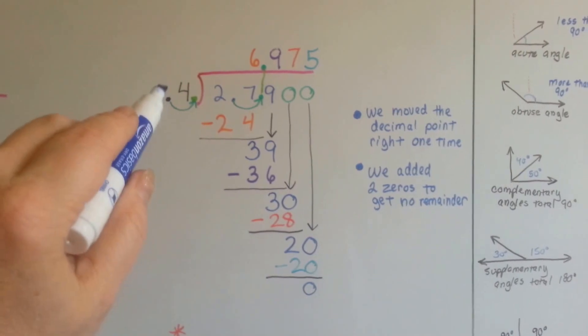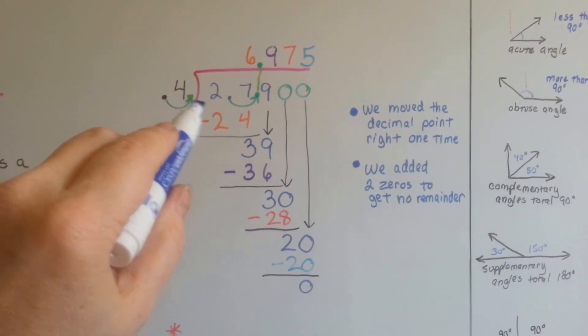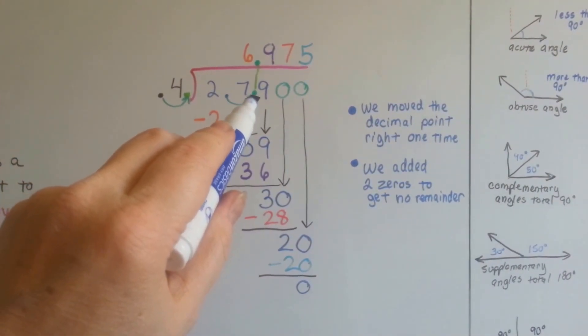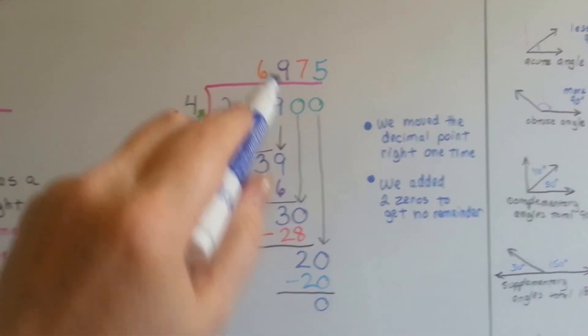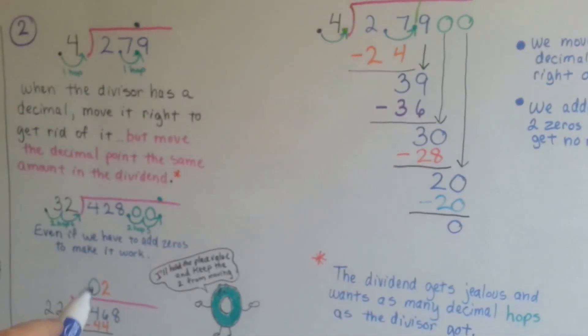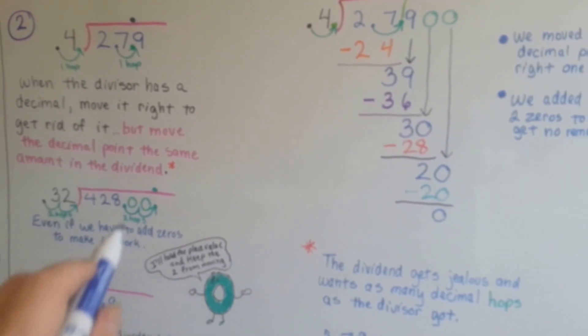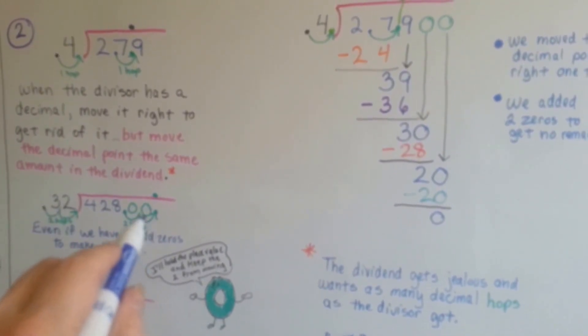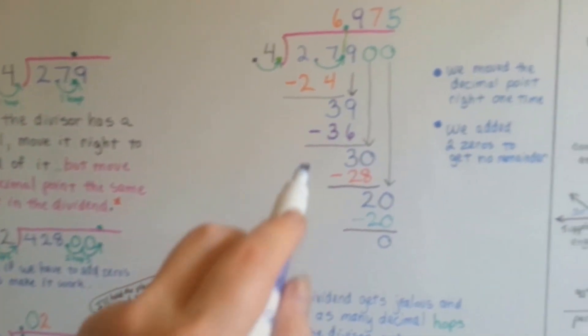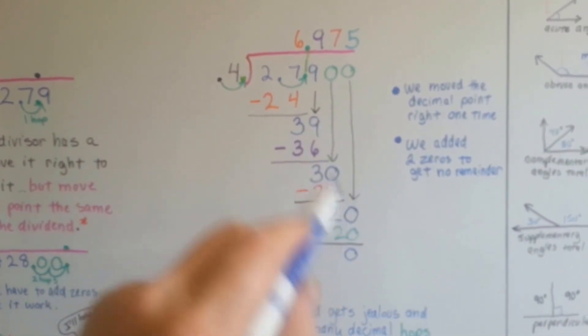So move the decimal point over to get rid of it, but make sure you do the same thing in the dividend, because he's going to get jealous, bring it straight up. If it creates a pocket, just add a zero, okay? And if moving it over creates empty pockets, put zeros there to hold the place. Do your division and just keep on going, okay?